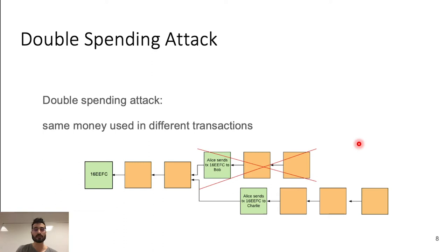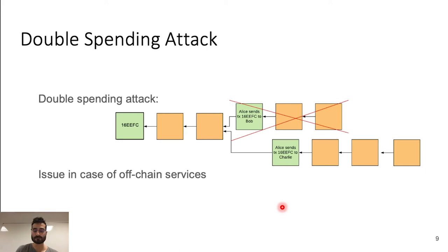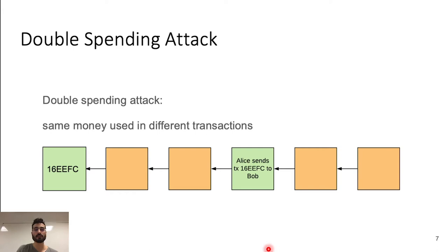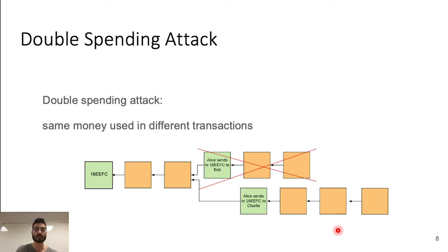So why is this an issue if only one out of two branches is confirmed? This is usually an issue in the case of off-chain services. Imagine that Alice is sending money to Bob to receive some off-chain service, like pizza — Bob does pizza delivery. Alice sends this money to Bob, she receives the pizza, and then she sends another transaction to Charlie, who does wine delivery. Charlie sees that the transaction is confirmed on the blockchain and sends wine to Alice. So Alice can have two services at the price of one.